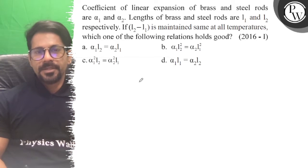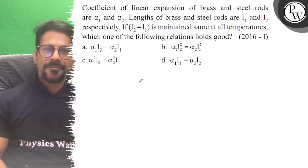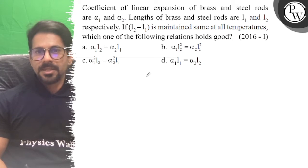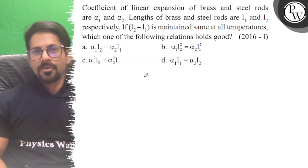Hello, let's see the question. Coefficient of linear expansion of brass and steel rods are α₁ and α₂. Lengths of brass and steel are l₁ and l₂ respectively. If (l₂ - l₁) is maintained at all temperatures, which of the following relations holds good?